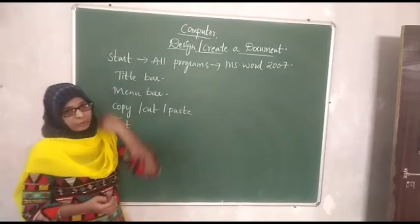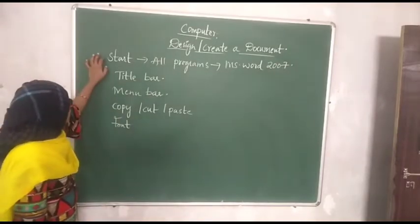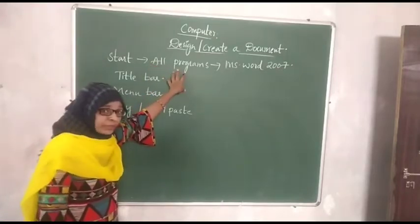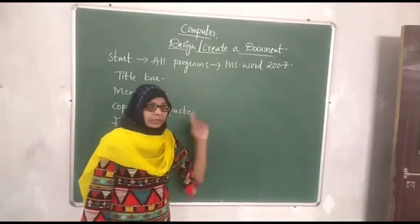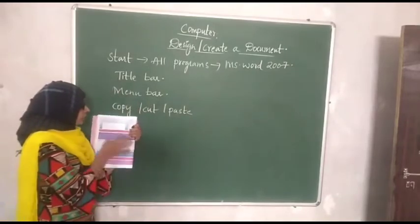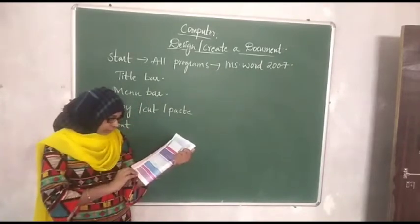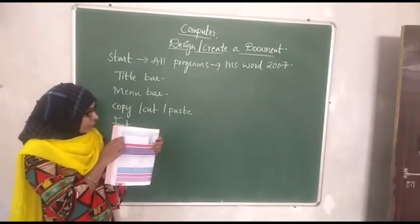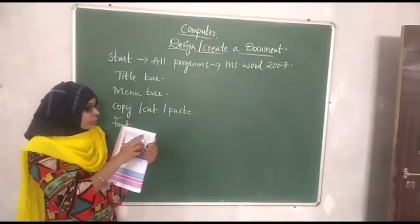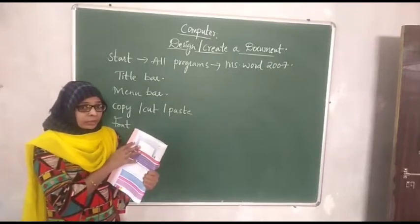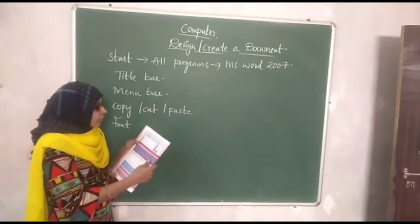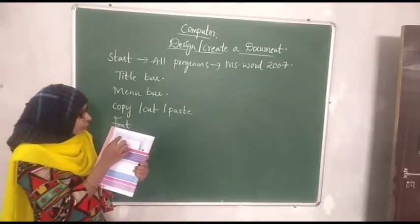Let us first begin with how to create a document in MS Word. When you start your computer, first click on Start, then a list of things appears. Click on All Programs, then click on MS Word 2007. This page appears when you click on these given instructions. This is how the Microsoft Word 2007 page looks like, and a number of options are provided here.